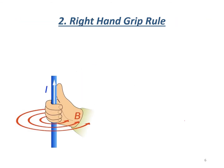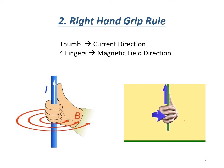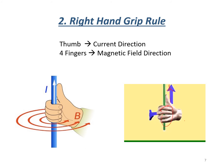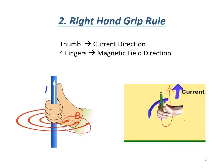To determine the directions of the magnetic field due to the current flow through a conductor, we can use the right-hand grip rule, where our thumb points in the direction of the current flow, and the forefinger wrapped around the wire points in the direction of the magnetic field set up around it.